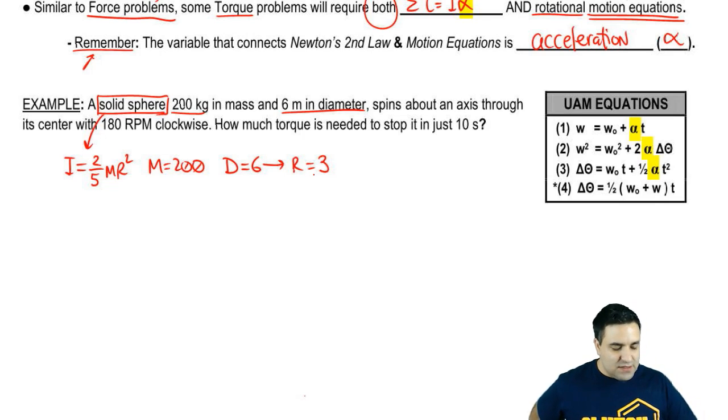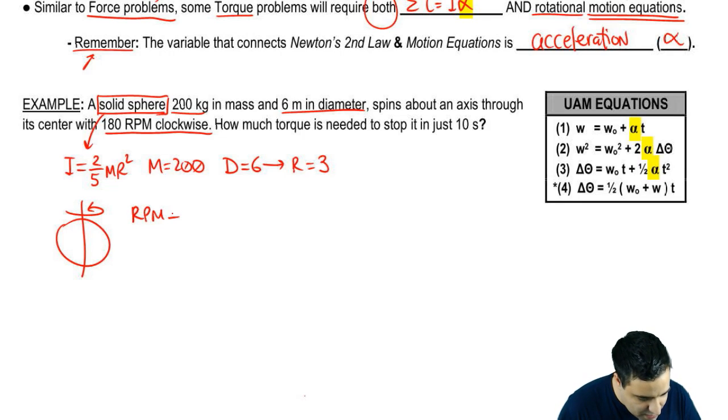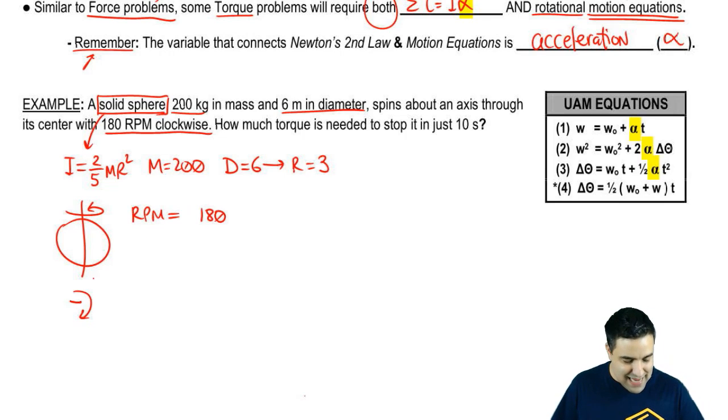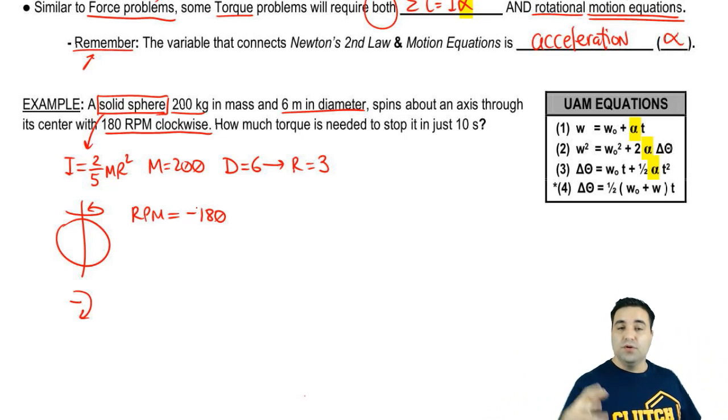Remember, in physics, you're never going to use the diameter. As soon as I see diameter, I convert that immediately into radius, which is half of that, so it's 3 meters. And it spins about an axis through its center. This is the regular rotation of a solid sphere, which is around itself. It says it does this with 180 RPM clockwise. So the RPM is 180. Clockwise is going to mean that it is negative.